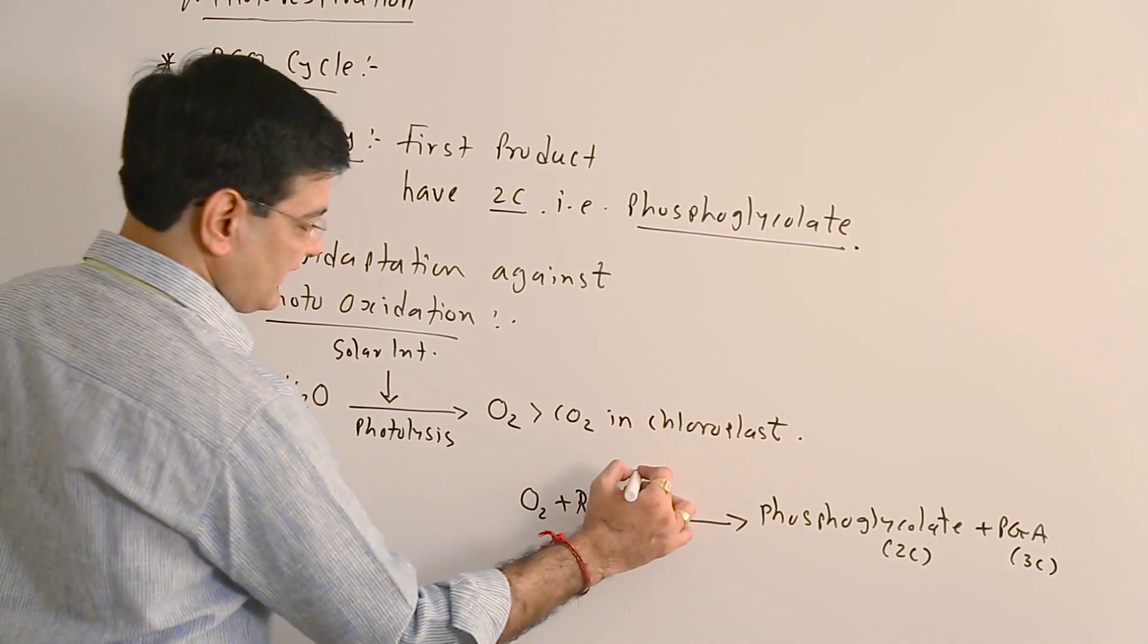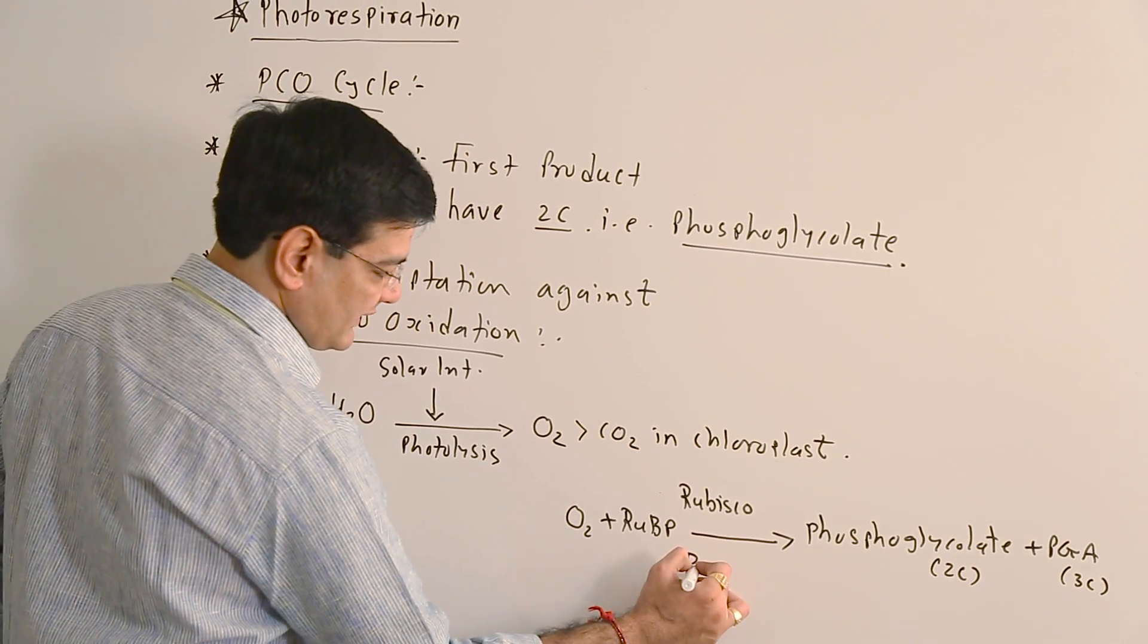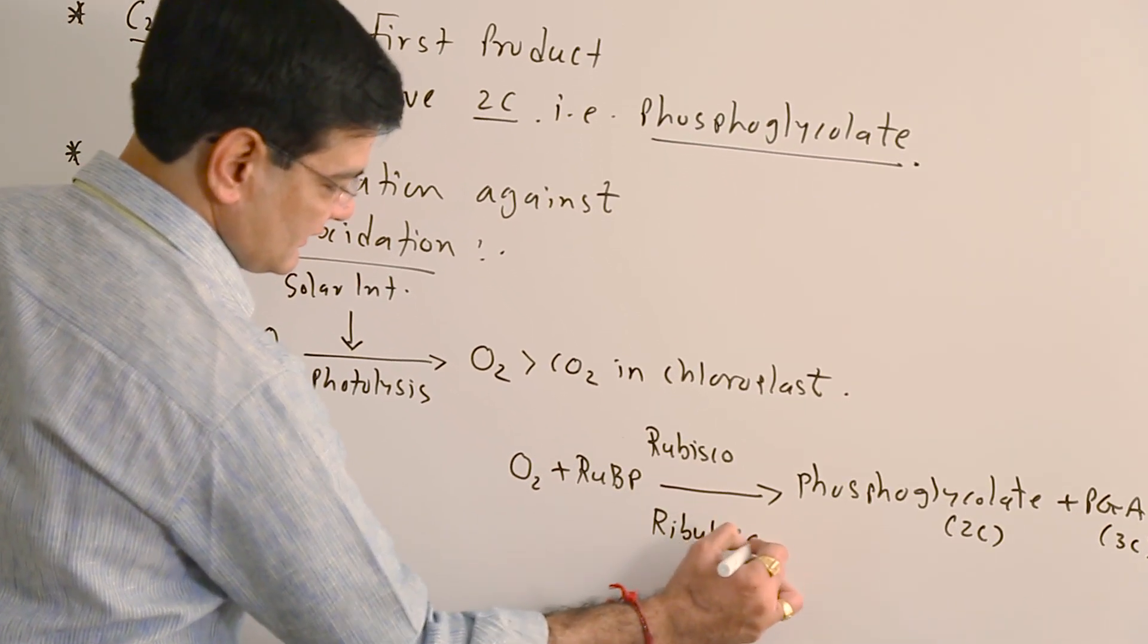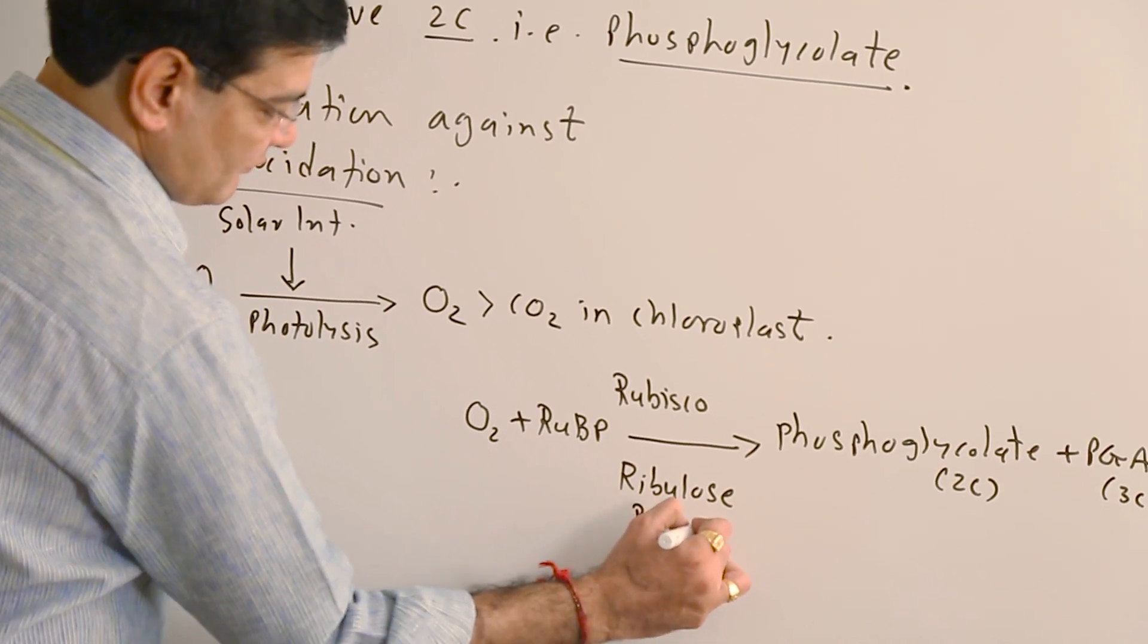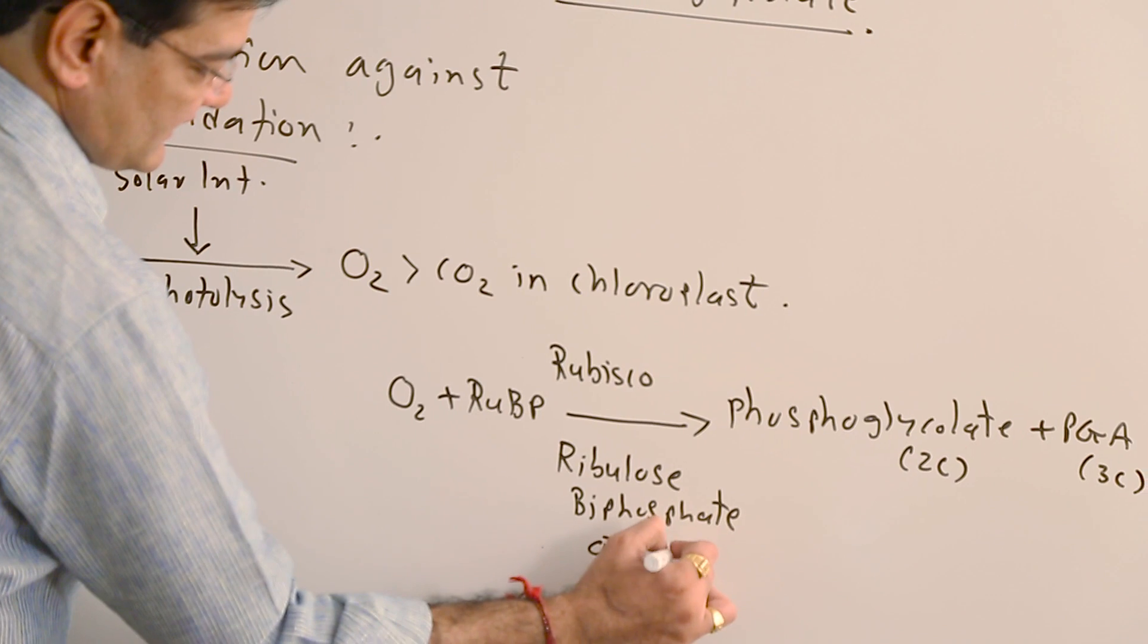Here the enzyme is Rubisco. This Rubisco, we know very well, acts here as ribulose bisphosphate oxygenase.